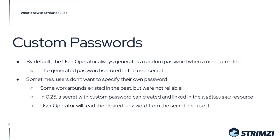The first improvement is the possibility to configure custom passwords. By default, the user operator always generates a new random password when a user is created, and the generated password is then stored in the user secret. But sometimes users don't want to use the generated password and instead want to specify their own. There was a workaround where if you created the user secret first before creating the Kafka user resource, the operator would use the password from the secret. But it was not completely reliable because you really needed to create the secret first and only then create the Kafka user resource.